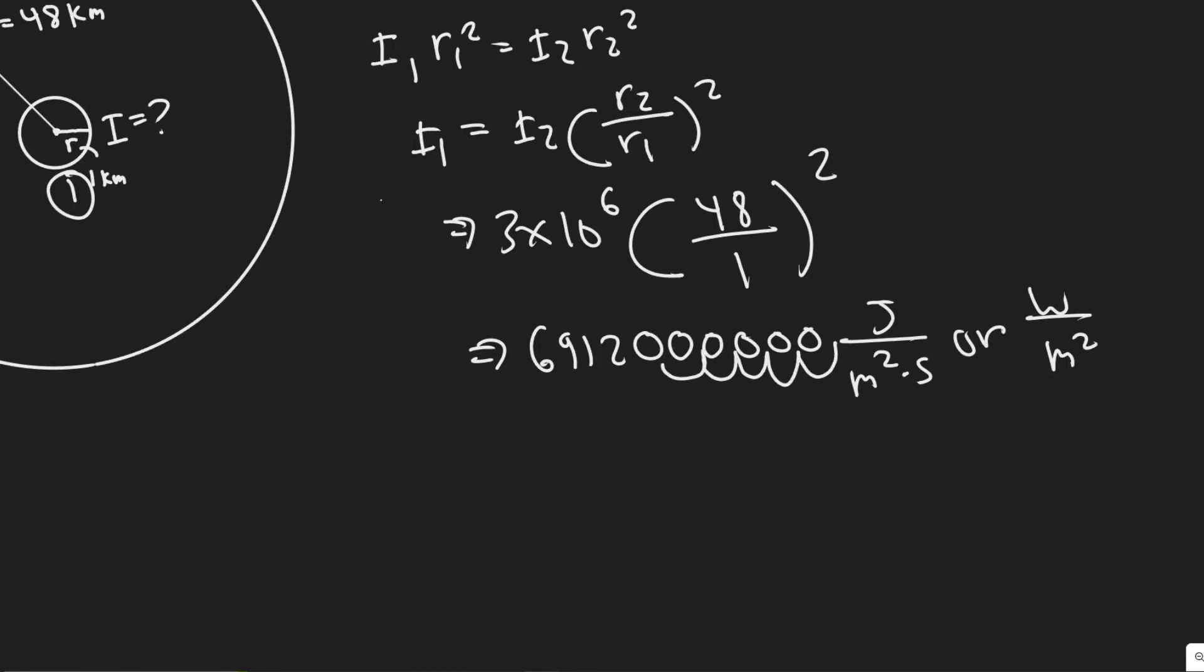So rewriting this value, 1, 2, 3, 4, 5, 6, 7, 8, 9. So 6.91 times 10 to the 9. And then I'm just going to use watts per meter squared.